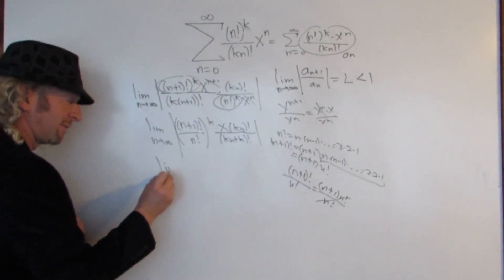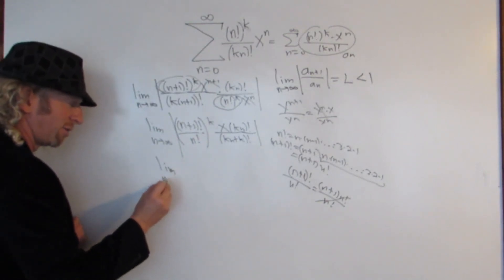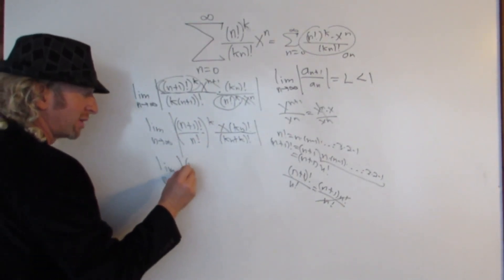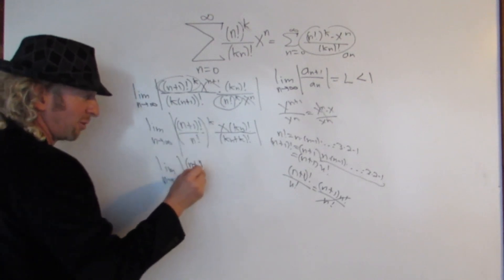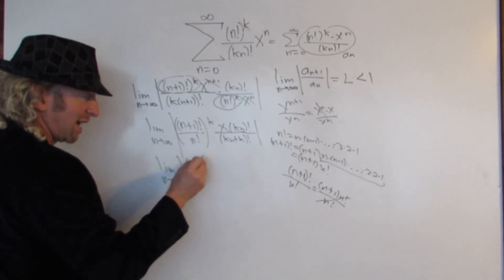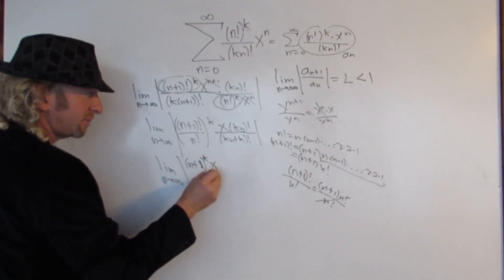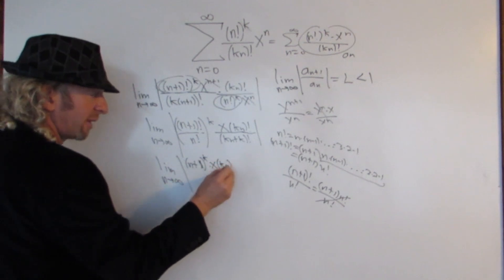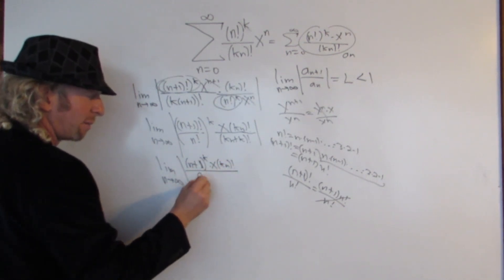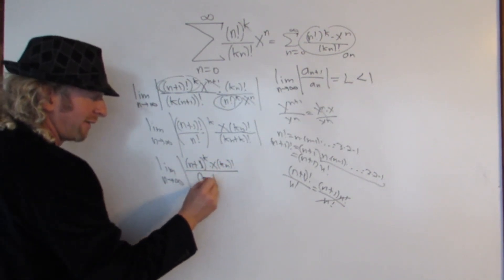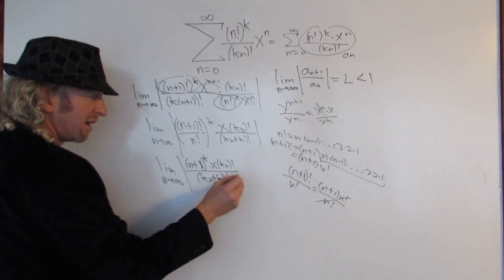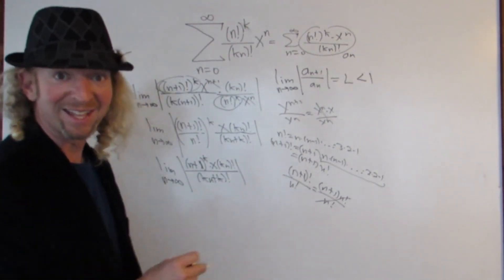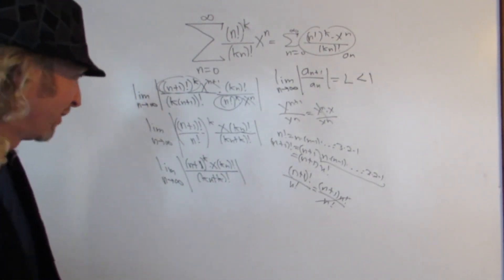So this is equal to the limit as n approaches infinity of the absolute value of n plus 1 to the k — let's not forget the k — times x, and then we have kn factorial over kn plus k factorial. And this is where we're going to have to think carefully and see if we can figure it out.